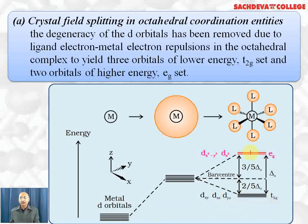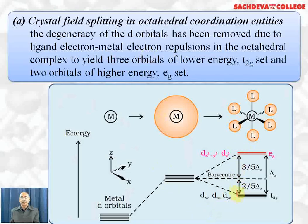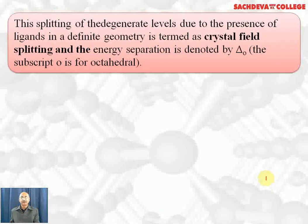This splitting of d orbitals into two sets is called crystal field splitting. The energy of separation between the d orbital sets is denoted by Δo (delta o), called the octahedral crystal field splitting energy. The energy of the two eg orbitals increases by 3/5 Δo, and that of the three t₂g orbitals decreases by 2/5 Δo.